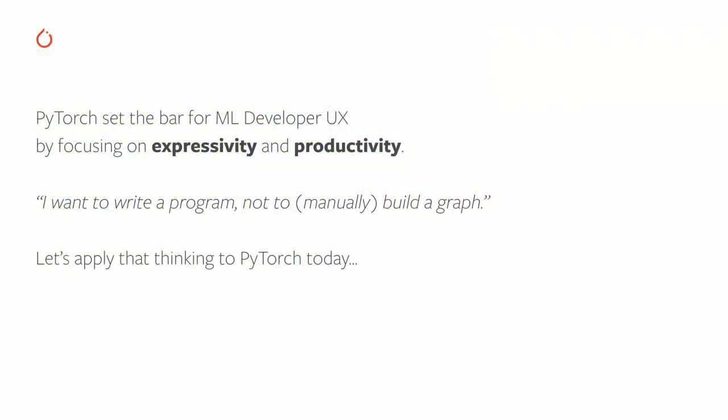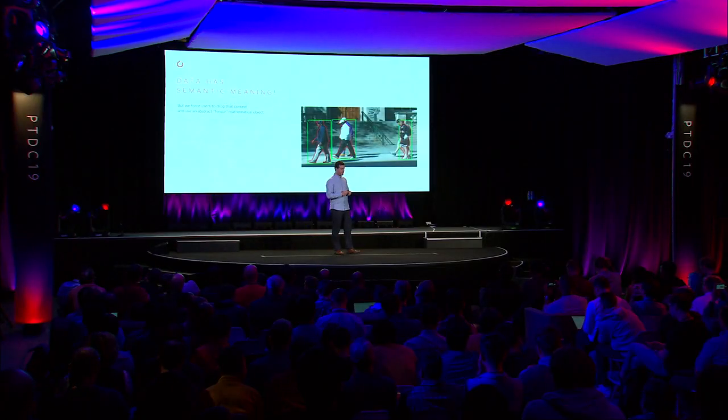In the PyTorch front end, we're really guided by having the best user experience by focusing on expressivity and productivity. You see this from the beginning of PyTorch, where we focus on building a framework around writing programs, not manually building graphs. And if we apply this thinking to PyTorch today, how can we make PyTorch even more expressive and productive? Where can we make improvements?